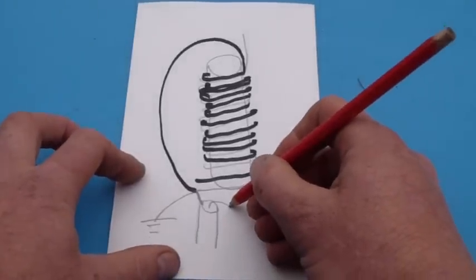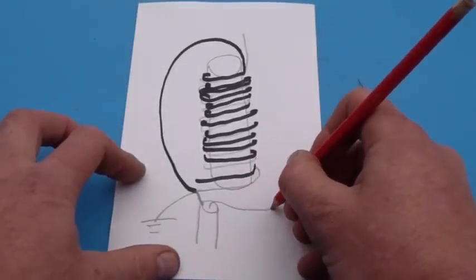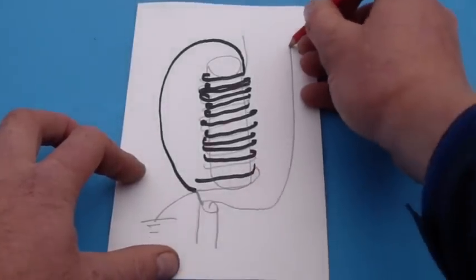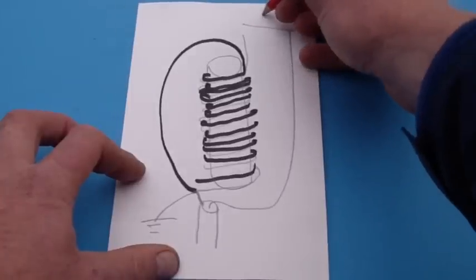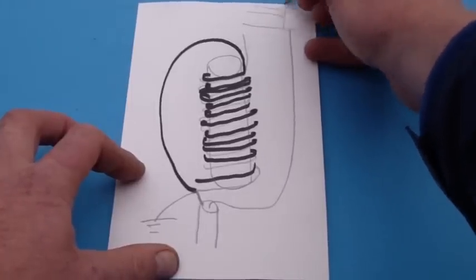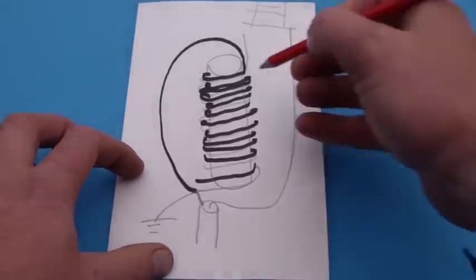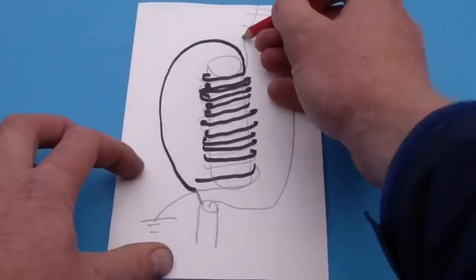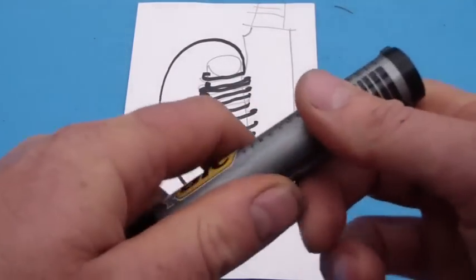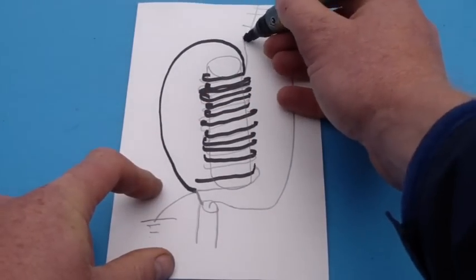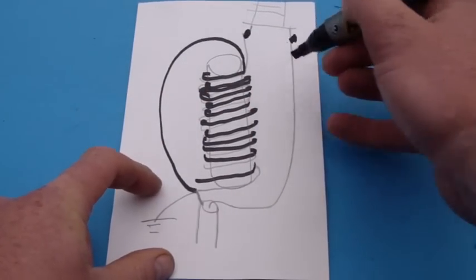This point here goes up and connects to your ladder line. That's your ladder line. This point here connects to the other side of your ladder line. So that becomes your balanced output.